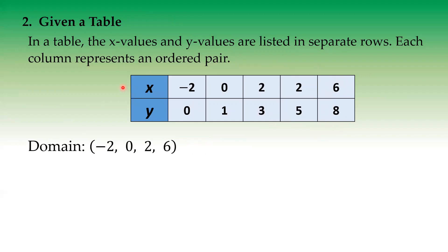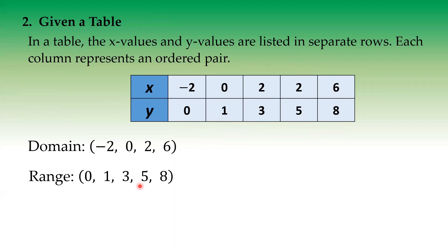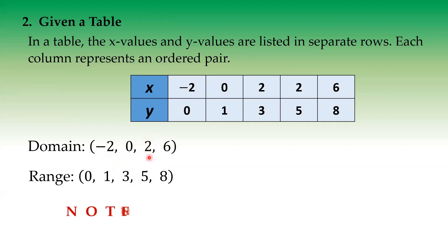So the domain — our x values — is: negative two, zero, two (only listed once), and six. For range, we have zero, one, three, five, and eight. Matching them: negative two to zero, zero to one, two to three, two to five again, and six to eight. We can see that three and five share the same x value of two. So there are matching first coordinates, meaning this is not a function.